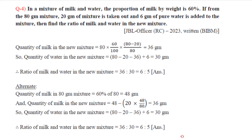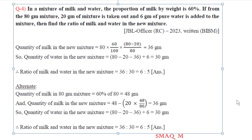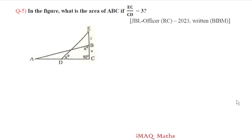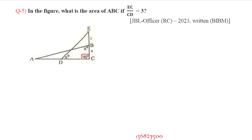Question number 5: In the figure, what is the area of triangle ABC if EC by CD equals 3? From the figure, triangle ABC is similar to triangle CDE, and the angles are 90 degrees. BC corresponds to CD, and AC corresponds to CE in the similar triangles, so EC by CD equals 3.